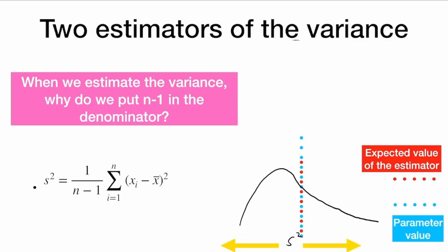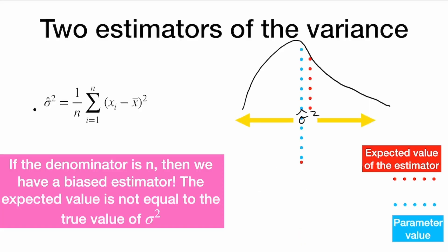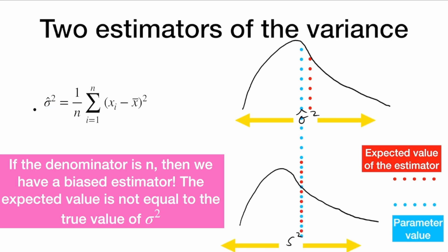Now let's look at something that is not unbiased. When we estimate the variance, why do we put an n-1 in the denominator? We do so because this estimator of the variance is unbiased. We can see the distribution of the sample variance here, and the parameter we want to estimate and the expected value of this estimator line up. But if the denominator in the sample variance was n instead of n-1 — often denoted sigma-hat instead of s — then we have a biased estimator. The expected value is not equal to the true value of sigma-squared, as we can see: the blue value, the parameter sigma-squared, and the expected value of the estimator in red do not line up.